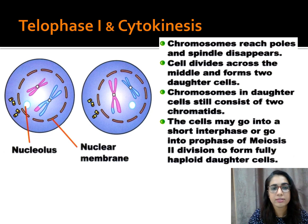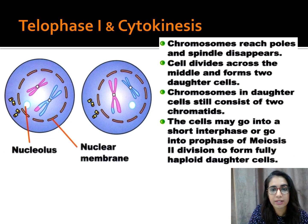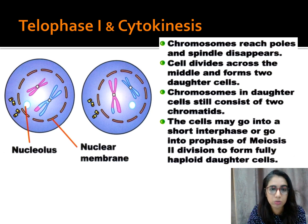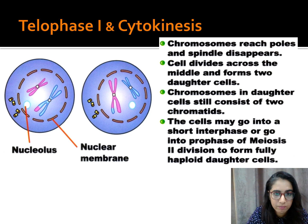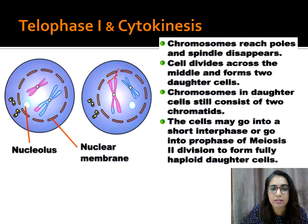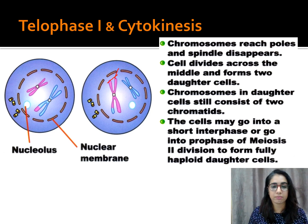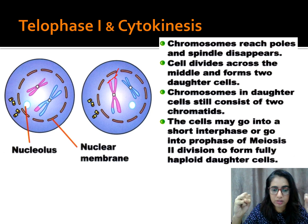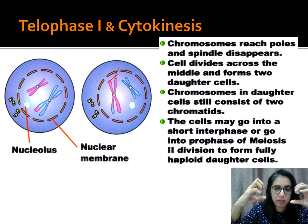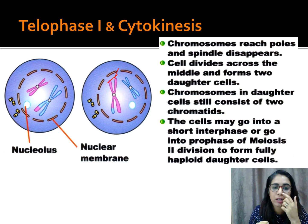In telophase 1, chromosomes reach the poles and spindle fibers disappear. The cell divides across the middle, forming two daughter cells. The chromosomes in each daughter cell still consist of two chromatids each. The cells may briefly enter a short interphase or go directly into prophase of meiosis 2.